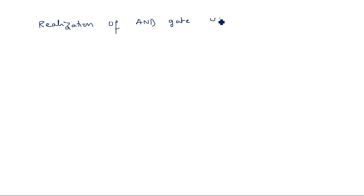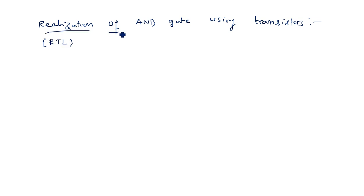Now let's see the same with respect to transistors — realization of AND gate using transistors, which is resistor transistor logic (RTL). These names are very important. There are generally diode logic, diode transistor logic (DTL), and transistor transistor logic (TTL) as well. So we have different logic families, where each family refers to a particular set of components used in the realization.